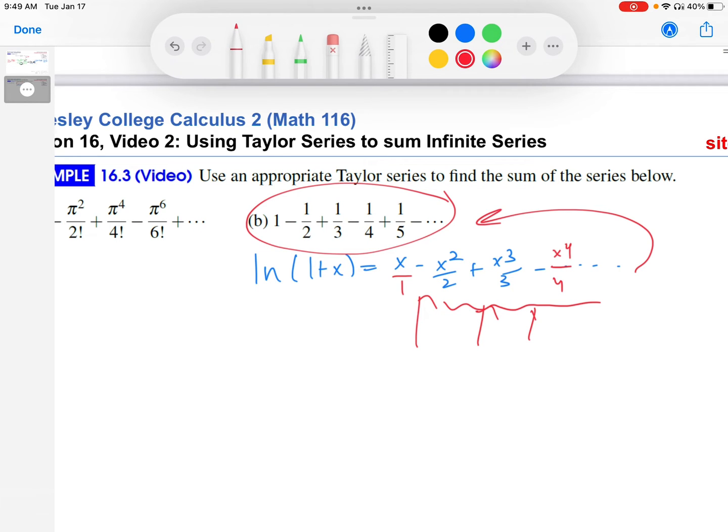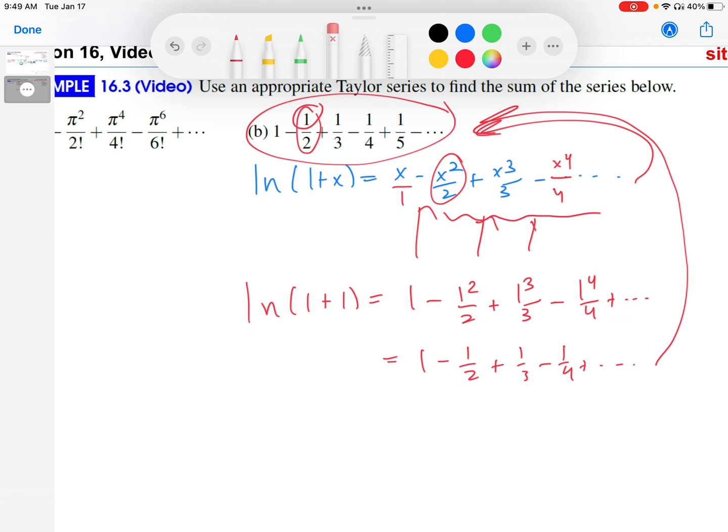And then what would be the x value? Well, just for example, looking at the 1 half term, x squared over 2, so it looks like x is going to be 1. Let's try that. How about ln of 1 plus 1? That would be 1 minus 1 squared over 2 plus 1 cubed over 3 minus 1 to the 4th over 4 plus dot dot dot. So 1 minus 1 half plus 1 third minus 1 quarter plus dot dot dot. That is reproducing the series that we had. So we do think that this series equals ln of 1 plus 1, which is ln of 2.